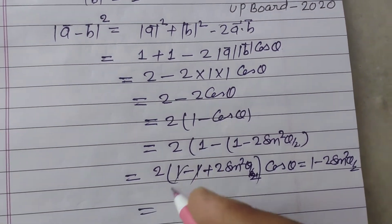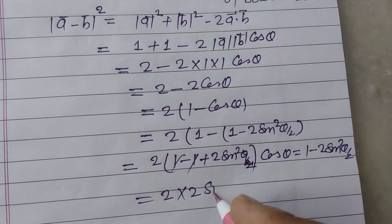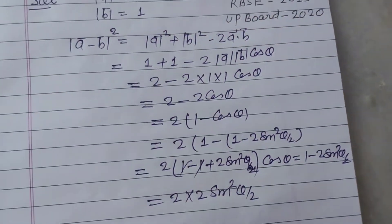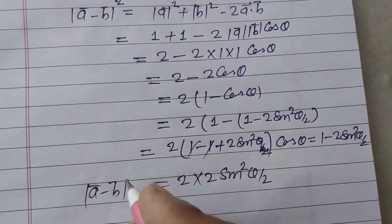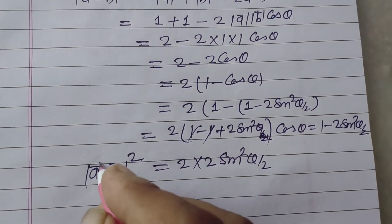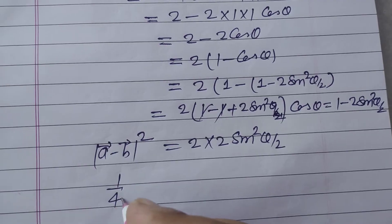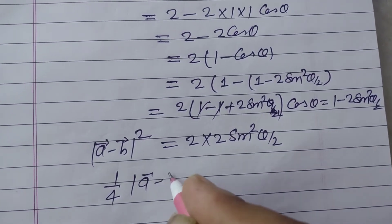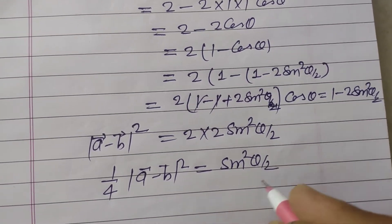And this 1, 1 cancel, we got 2 into 2 sin square theta by 2. And this is equal to vector A minus vector B mode whole square. So we divide it by 4, vector A minus vector B mode whole square equal to sin square theta by 2.